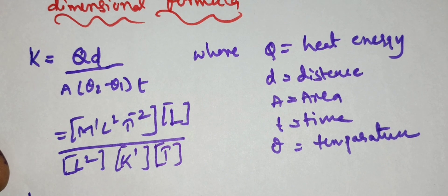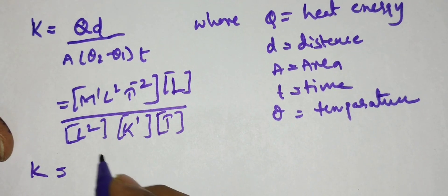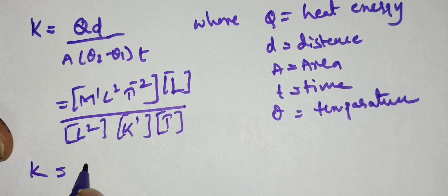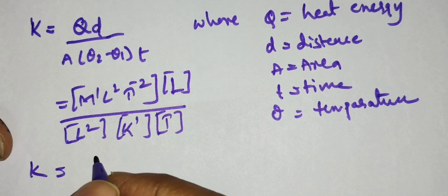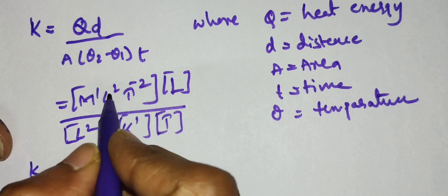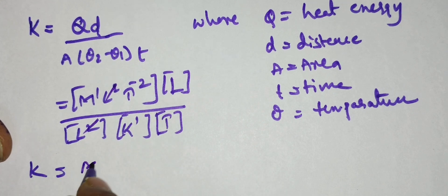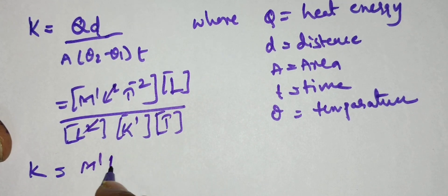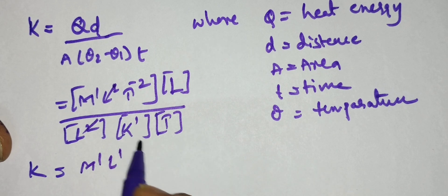So here it is, l square l square will get cancelled denominator and numerator. So we will get m power 1, l power 1, t power minus 3.